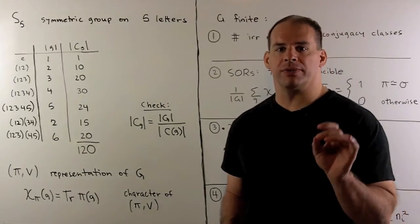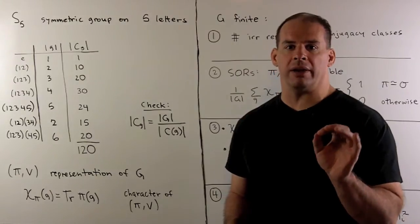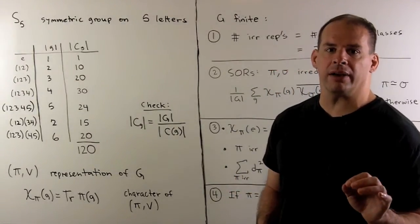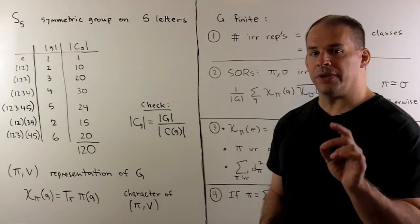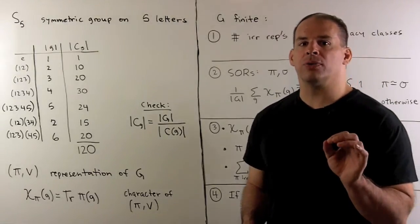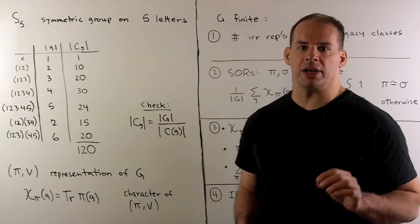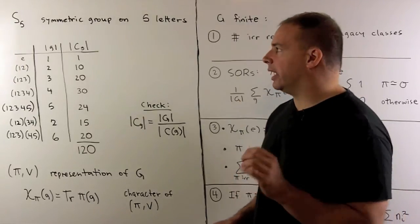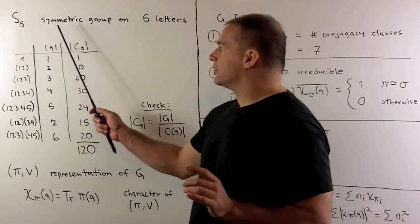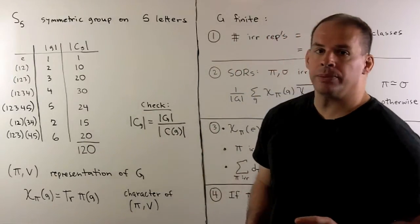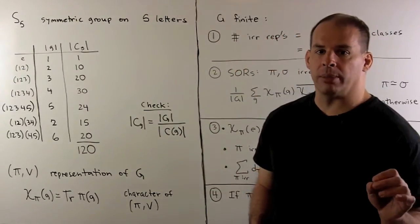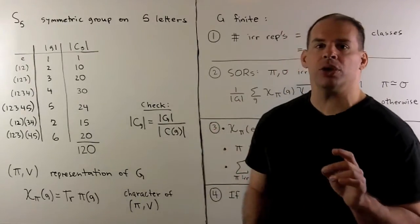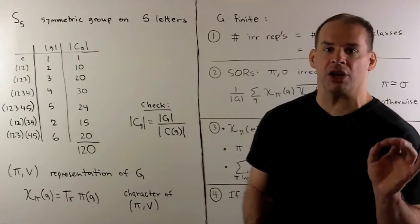Having worked out the character tables for S4 and A4, we move on to the tables for S5 and A5. A new feature here: we use the character formula for alternating two-tensors. We have S5, a symmetric group on five letters. This group has 120 elements, and we'll start by decomposing S5 as a disjoint union of its conjugacy classes.